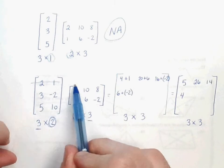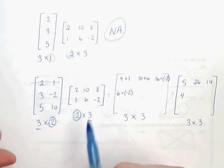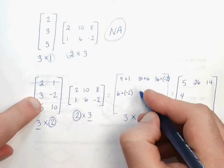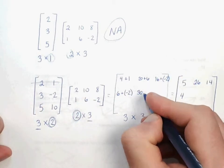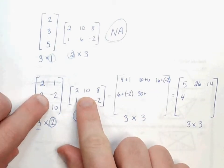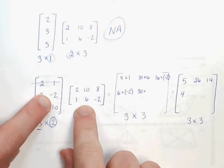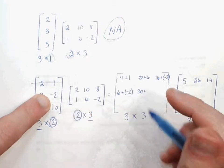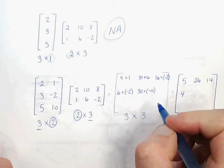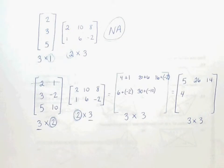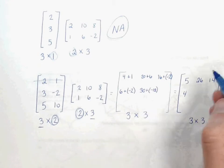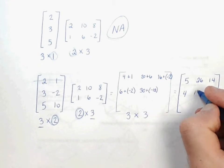6 plus negative 2 would be 4. So we'll use our second row with our first column, now let's use our second row with our second column. We're going to start with 3 times 10, which would be 30. Slide over and down. Negative 2 times 6 would be negative 12. So we get 30 plus negative 12, or 30 minus 12, which would give us 18.